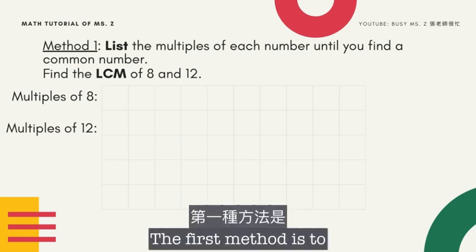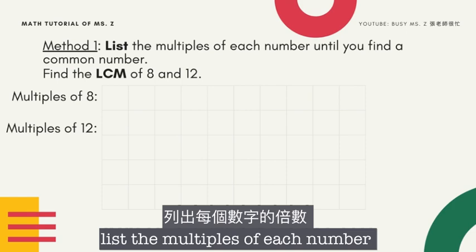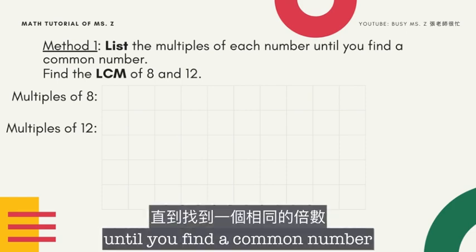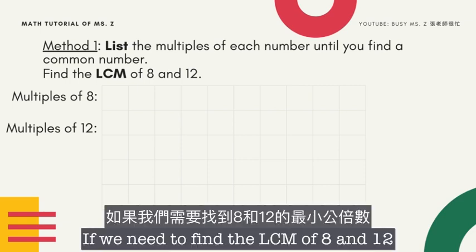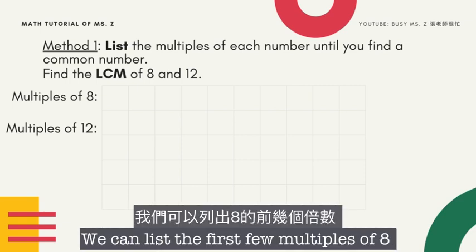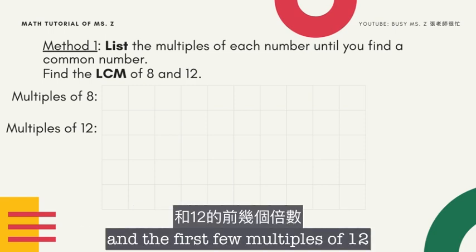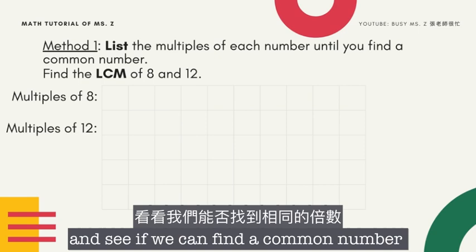The first method is to list the multiples of each number until you find a common number. So for example, if we need to find the LCM of 8 and 12, we can list the first few multiples of 8 and the first multiples of 12 and see if we can find the common number.